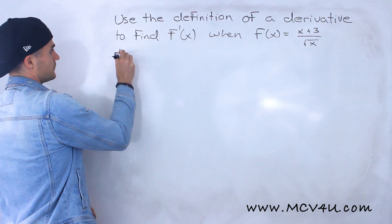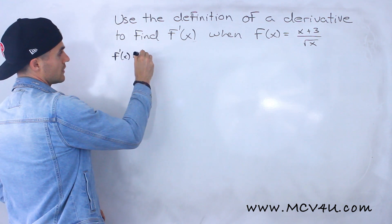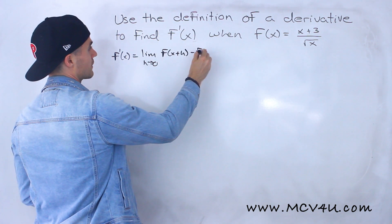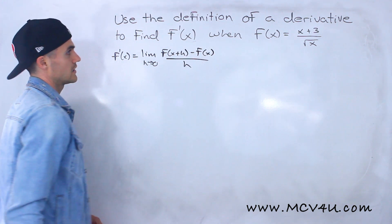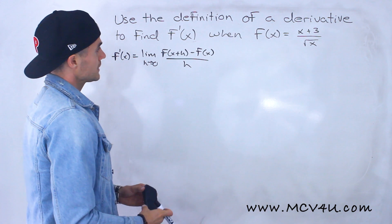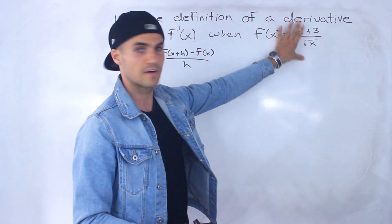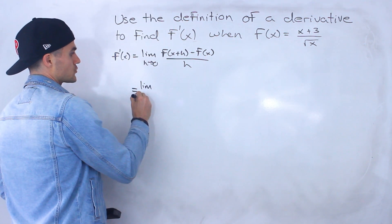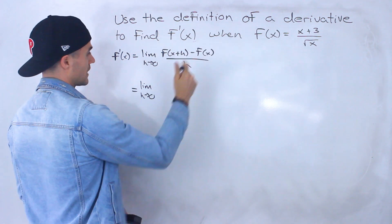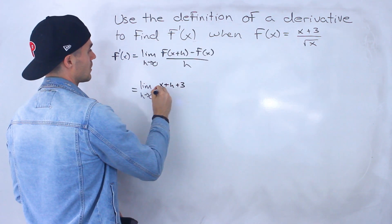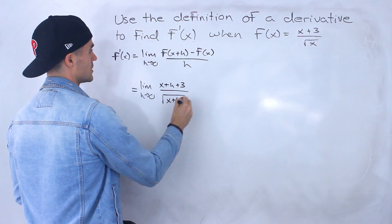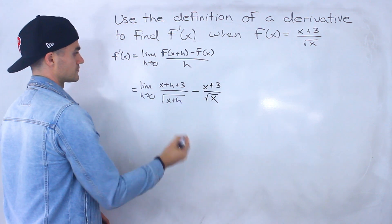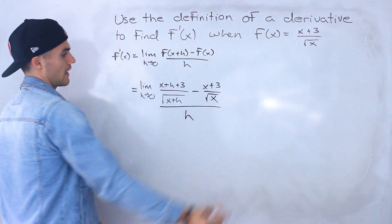We know the definition of a derivative is the limit as h approaches 0 of f of x plus h minus f of x, all over h. Now what we can do is use this function as given, but it's going to get pretty messy. If I plug in x plus h for all the x's, I'll have x plus h plus 3 over the square root of x plus h, minus f of x which was x plus 3 over the square root of x, all over h.